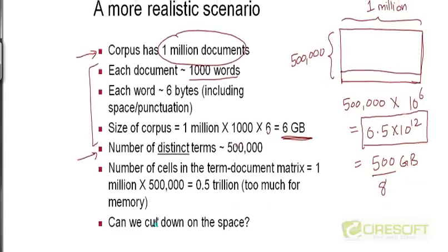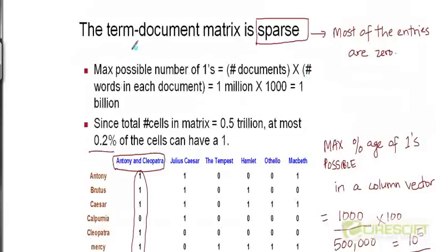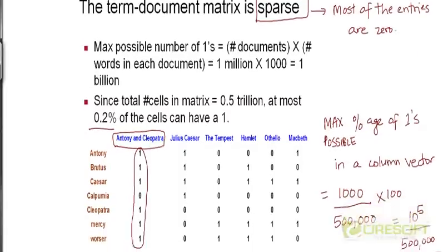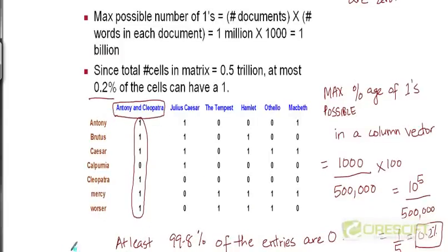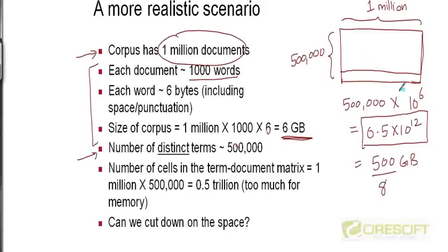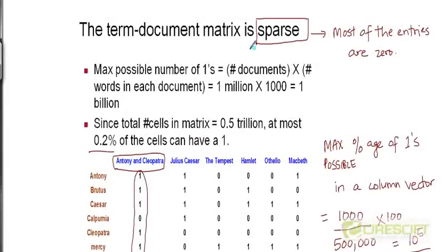So how do we cut down on the space? We really need to cut down on space in order to successfully build a system that can handle queries on this corpus. The first thing to notice in order to come up with a more efficient solution is that this term-document incidence matrix is going to be a very sparse matrix — a matrix in which most of the entries are 0, and the number of non-zero entries is a small fraction of the total.